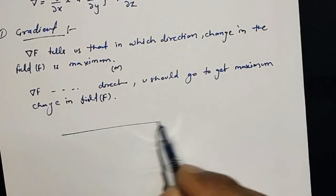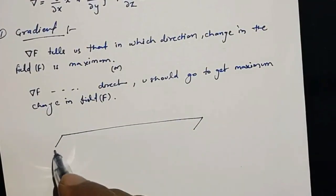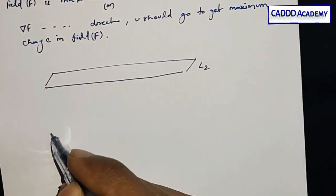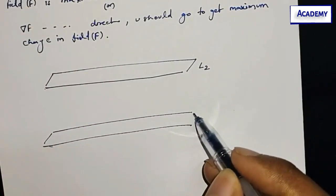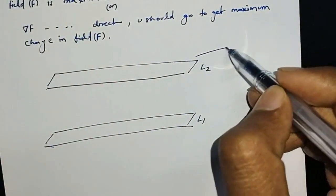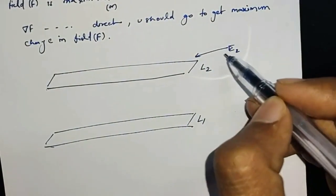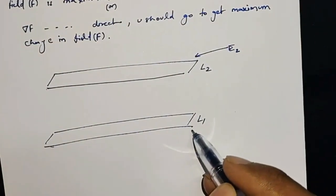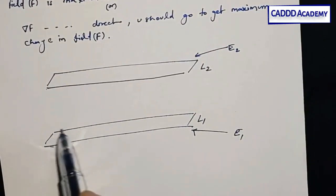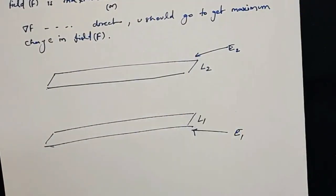Let's see this in a better way. Let's say we have two different levels — this is level 1 and this is level 2. These levels represent different values of the field. If the value of the field is E2 on this whole surface and E1 on the other, these could be electric field or any field. So basically there is a constant field value on each whole surface.